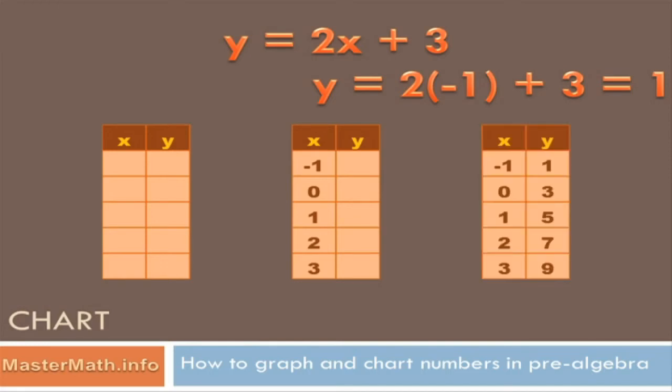We want to put that into our chart. We put where x is minus 1, a corresponding 1 for y. Then we go back and input an x value of 0 into the equation and come up with the corresponding y value and we come up with 3. And we do that for 1, 2, and 3 and all the x values and then we get y values for each of those x values.